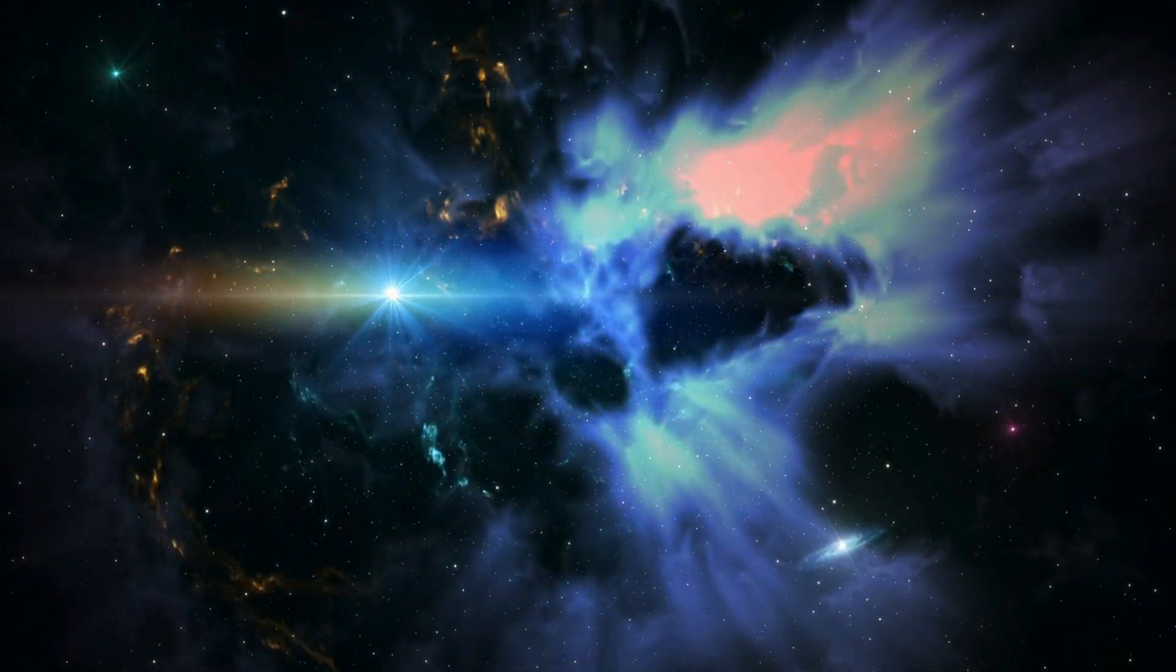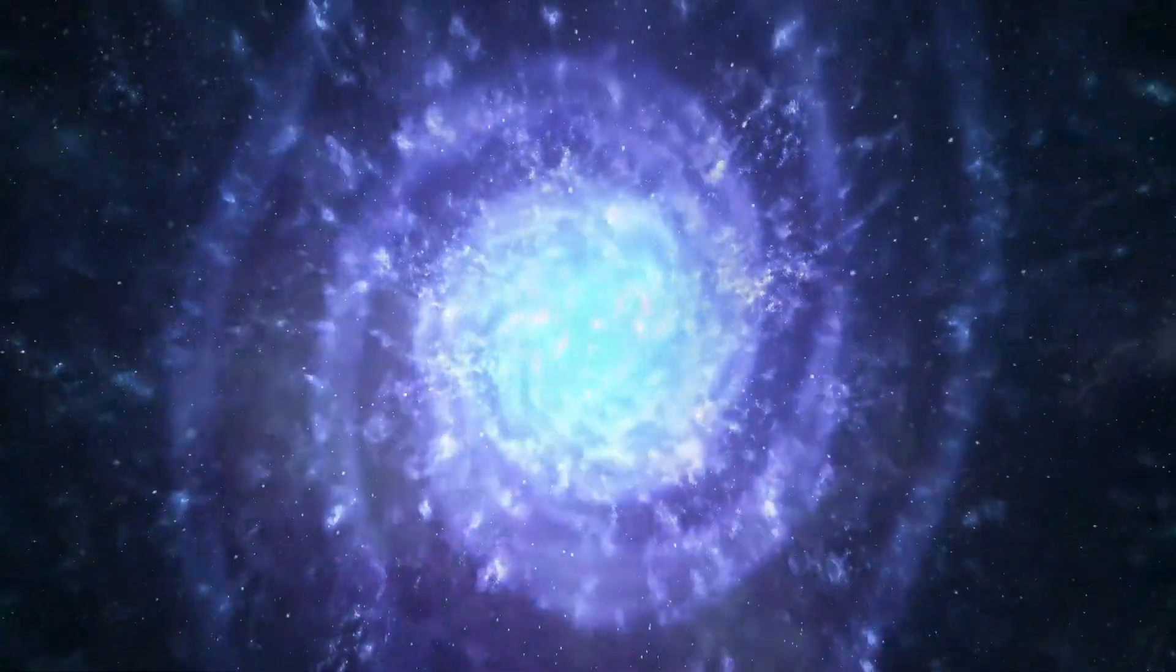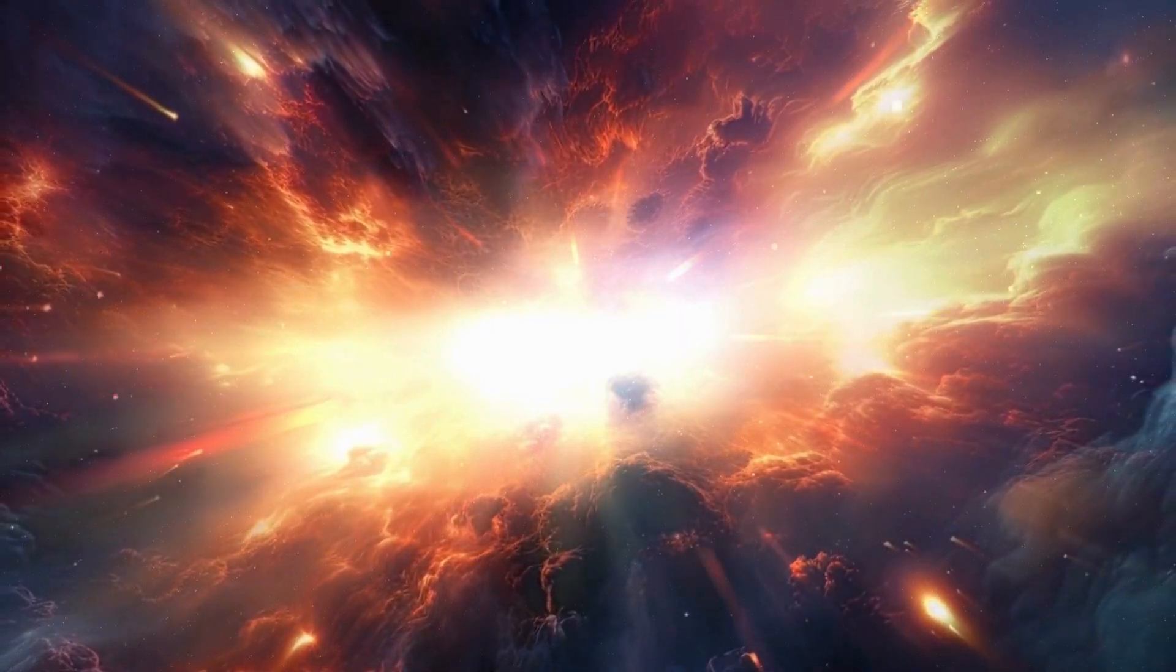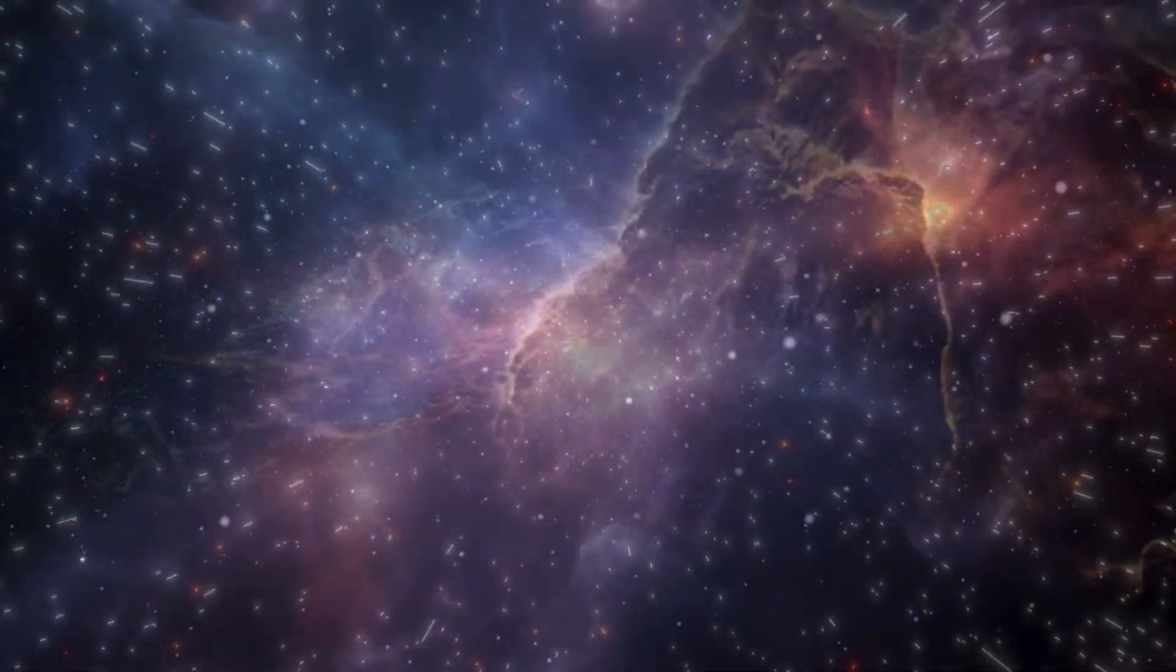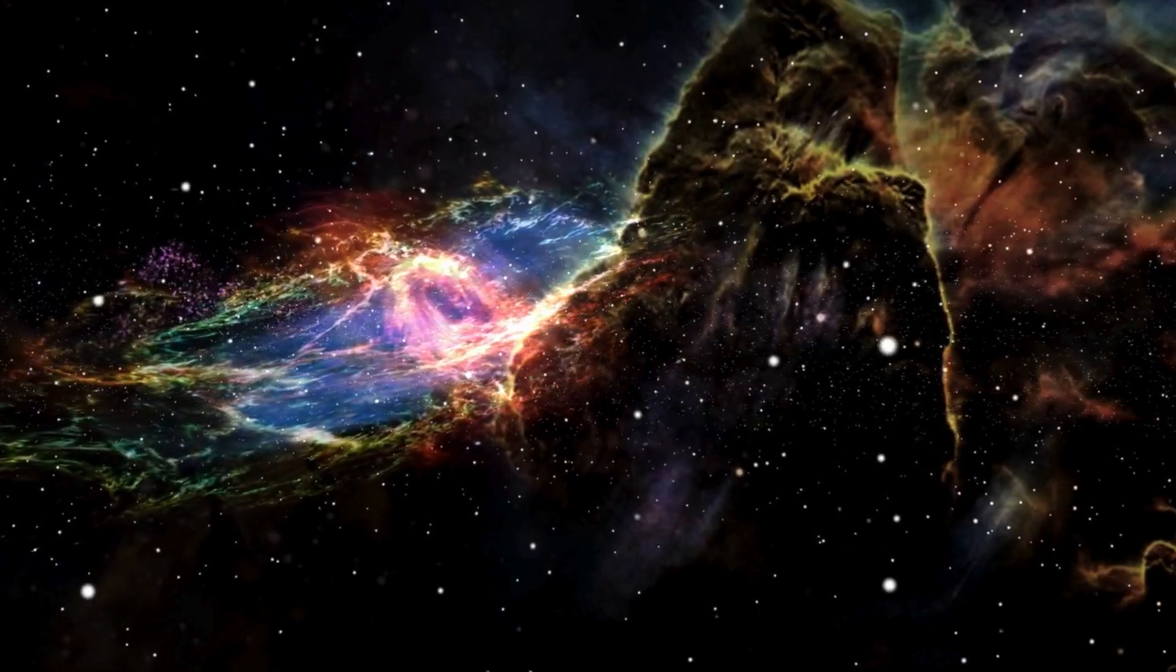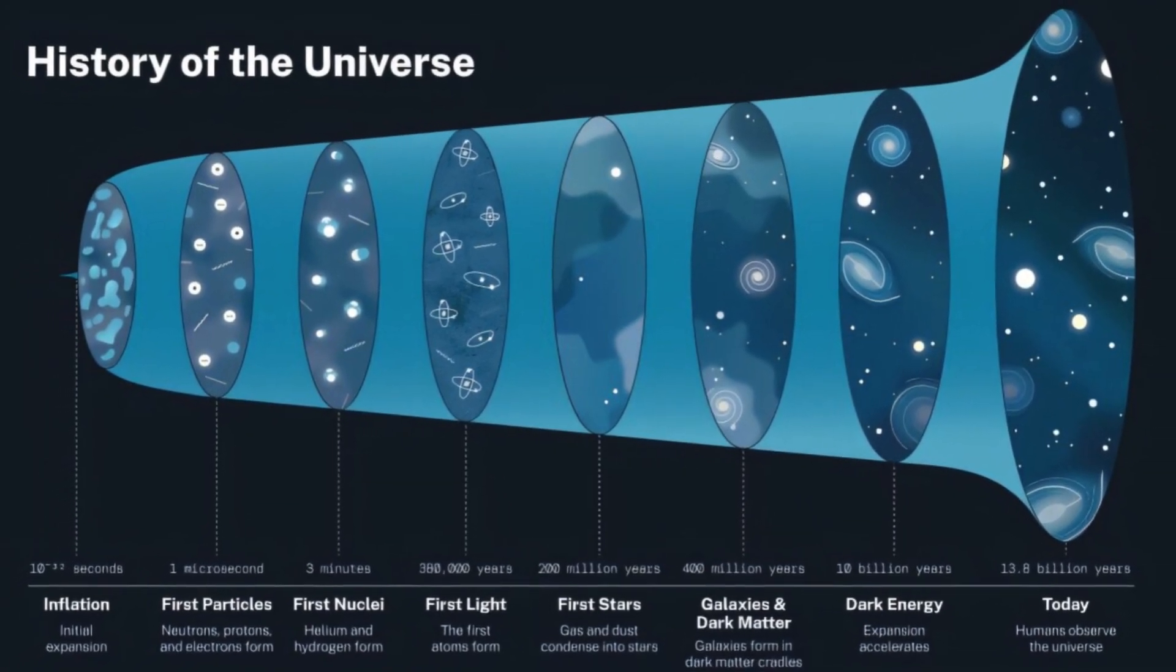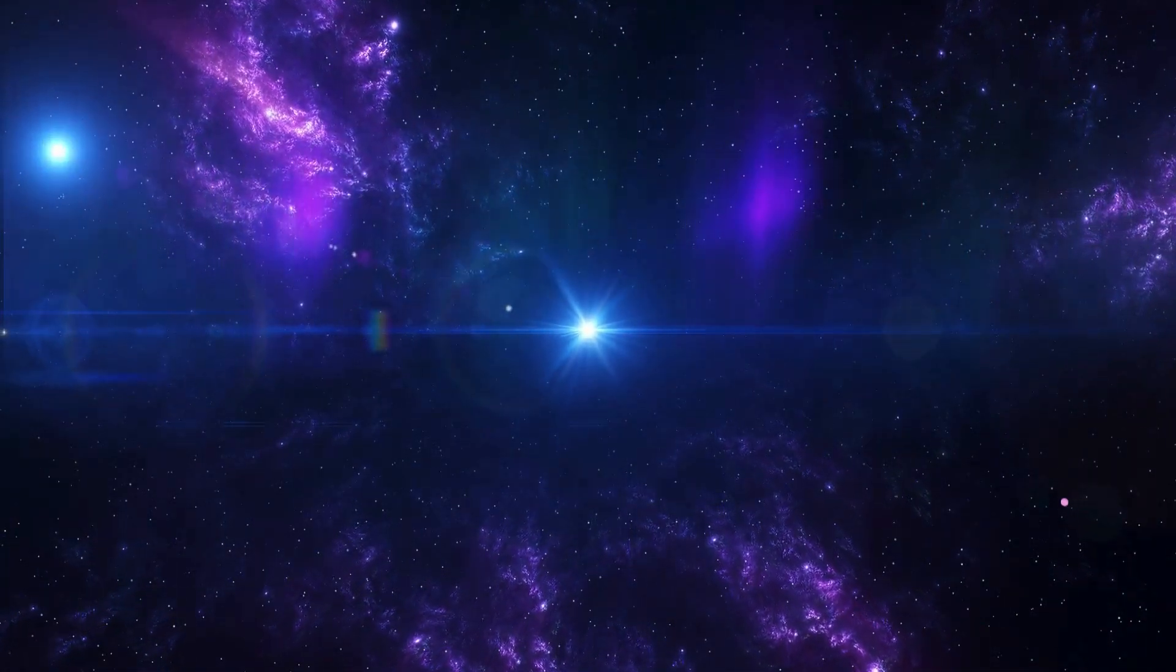This differential expansion stretches light passing through these regions, causing an anomalous redshift. Additionally, time dilation, a relativistic effect where time ticks slower in stronger gravitational fields, creates further distortions. Light traveling from voids into denser regions gains energy, blue shifts, but not enough to counteract the redshift, creating a net redshift. This cumulative effect gives the illusion of an accelerating universe.